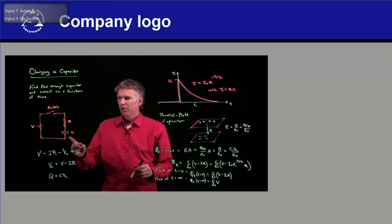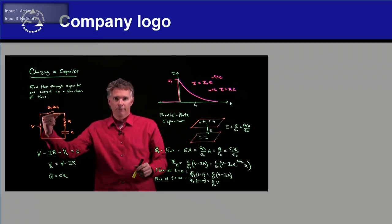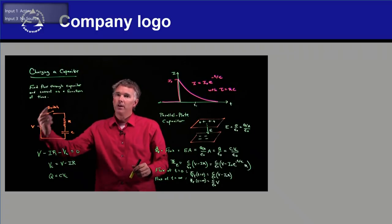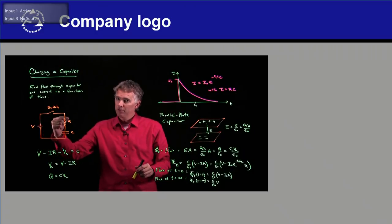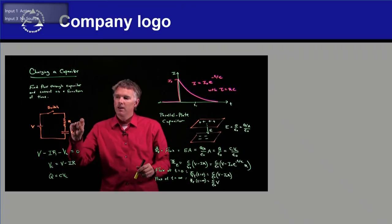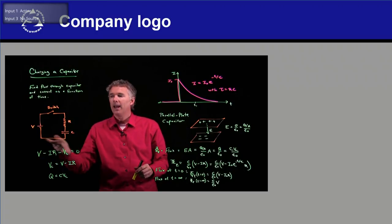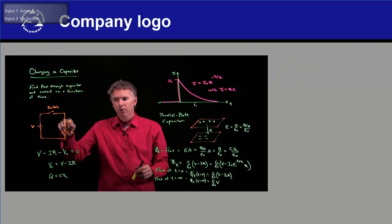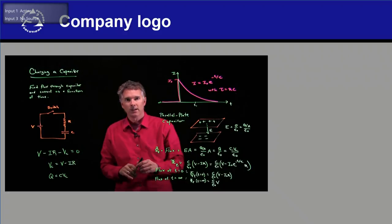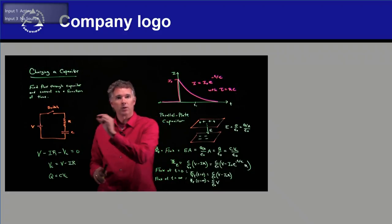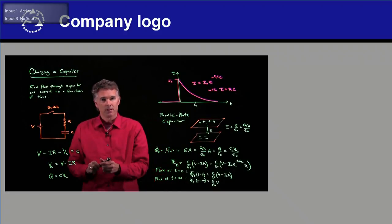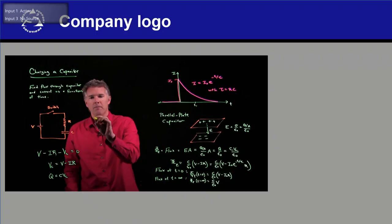Well, the maximum current is when you first close the switch. And when you first close the switch, the capacitor hasn't had a chance to charge up yet, and so all the current is dropping across the resistor. And so the maximum current...